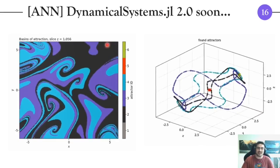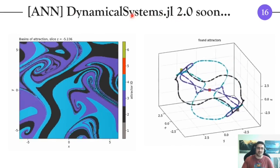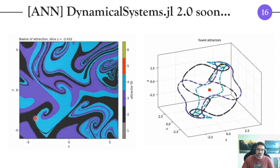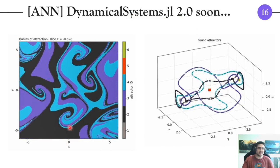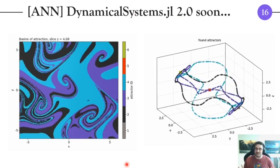Final slide before conclusions. Just some advertisement: expect soon an announcement of the DynamicalSystems.jl version 2.0 on the Julia Discourse. What I'm showing here is some super cool animations of some fancy new stuff, just to keep you hooked on what's going on.